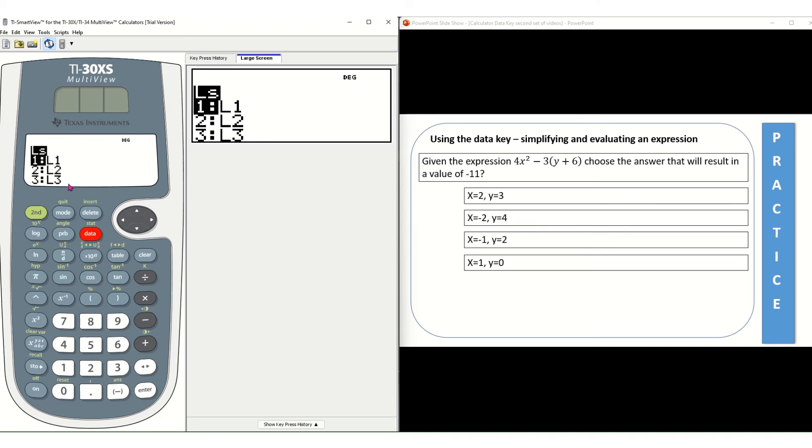So 4 open parentheses, data key, L1 which is that first option, press enter, squared, close your parentheses, minus 3 open parentheses. I'm not gonna type Y. I'm gonna use data key and I'm gonna select the second option which is L2.